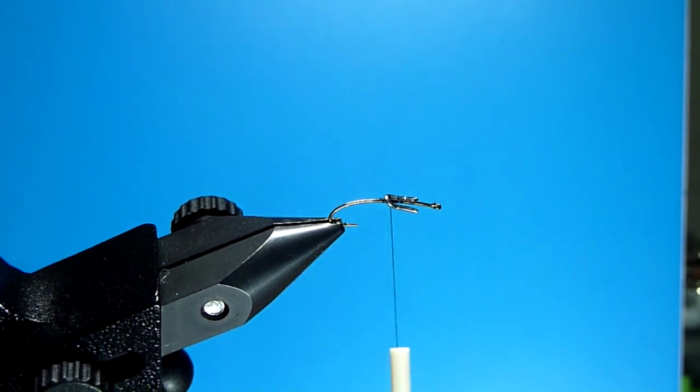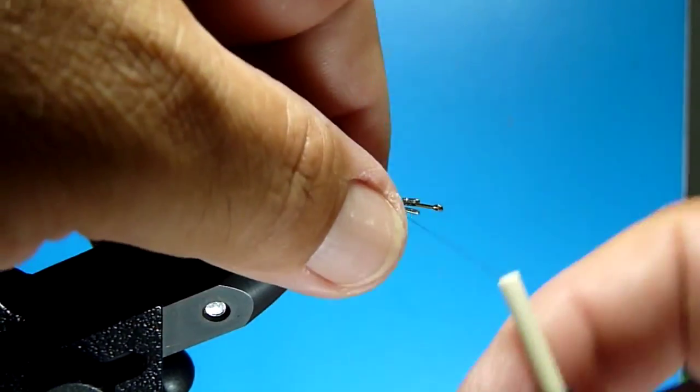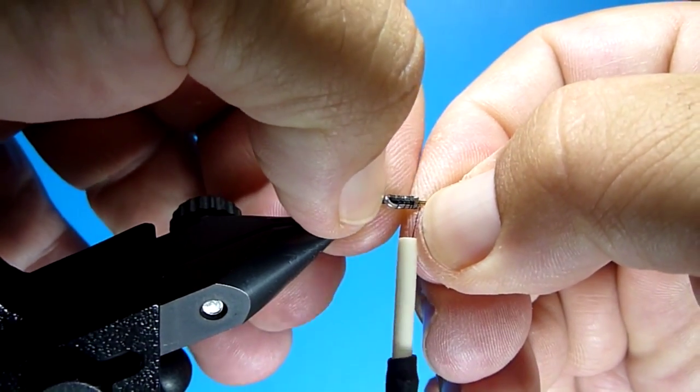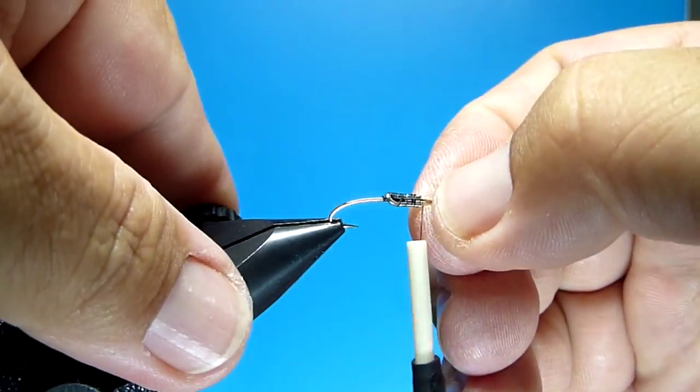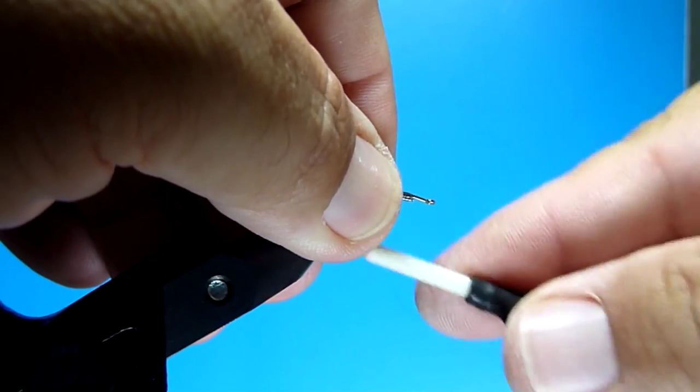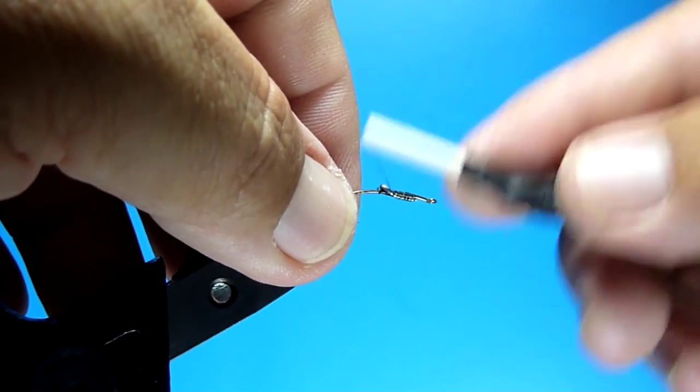You can obviously use a lead substitute, I just have a lot of lead wire left over. Before you get it too tight you can always slide it up or down the shank as needed. You want it pretty much in the mid part of the shank, that's where you're going to start the thorax on this.